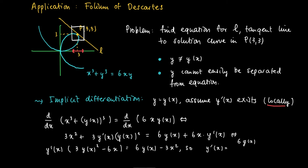So we see that y prime equals 6 times y minus 3x squared divided by 3 times y squared minus 6 times x. And we may write this as long as the denominator is not equal to 0.